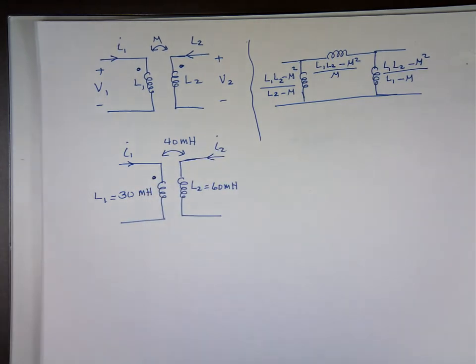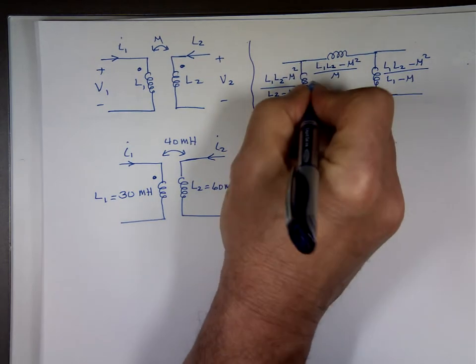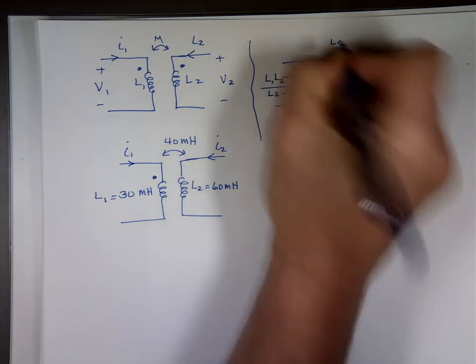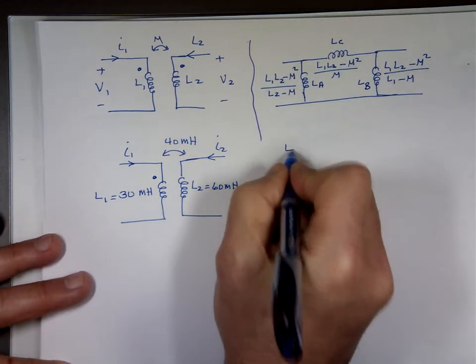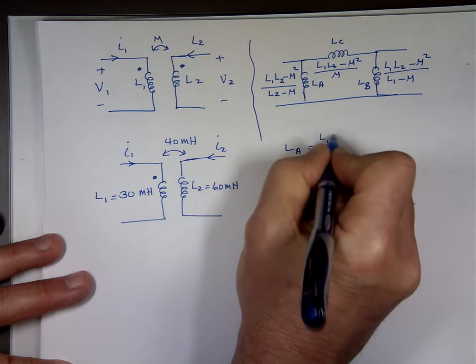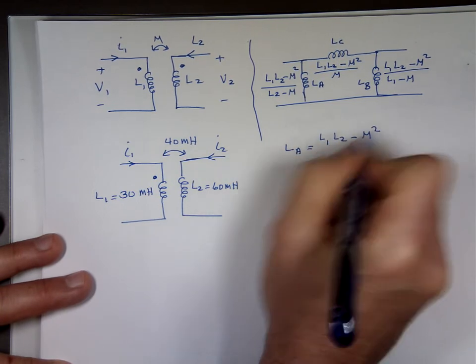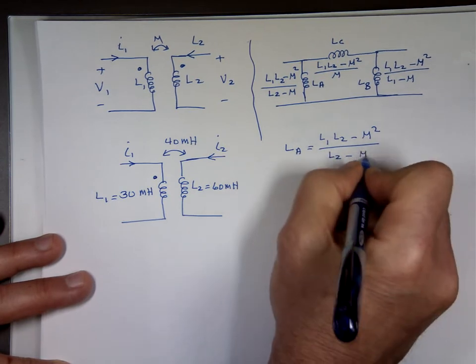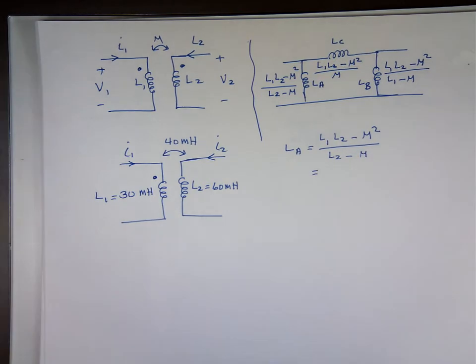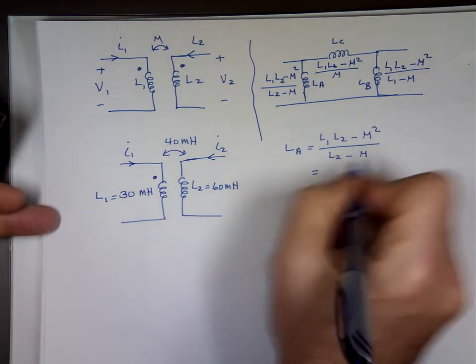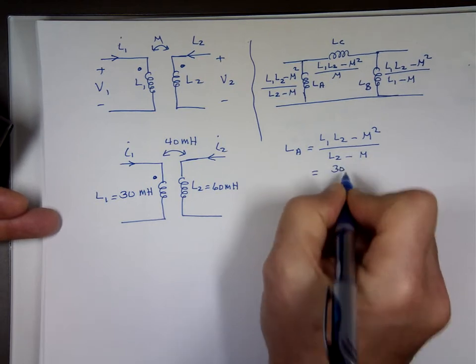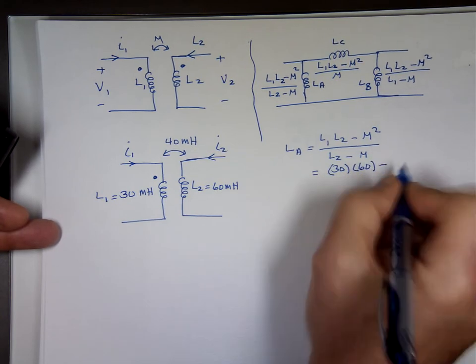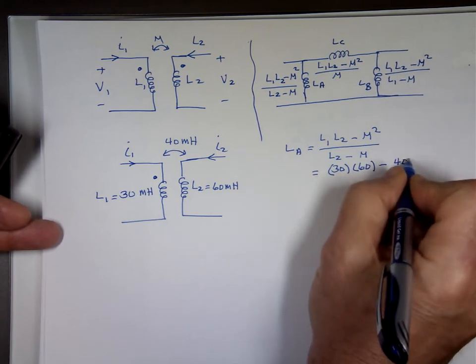So I need to find, I'm going to call this LA, I'm going to call this LB, I'm going to call this LC. So LA is equal to L1 L2 minus m squared over L2 minus m. So let's see. L1 is what? 30 millihenry. L2 is what? 60 millihenry minus 40 squared.